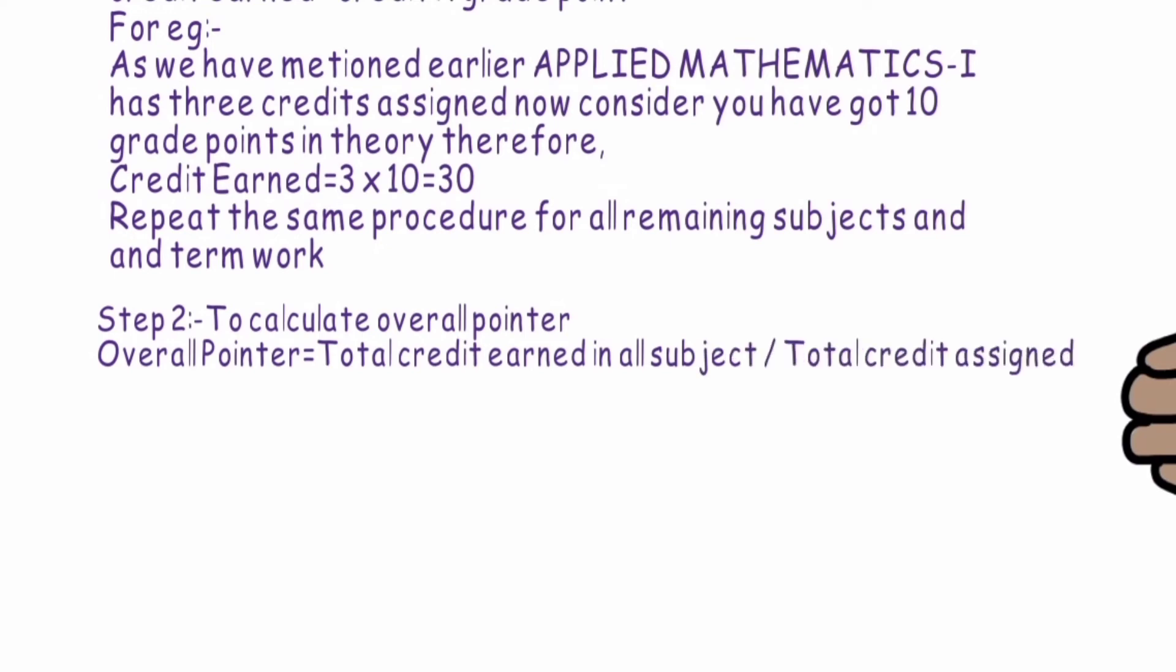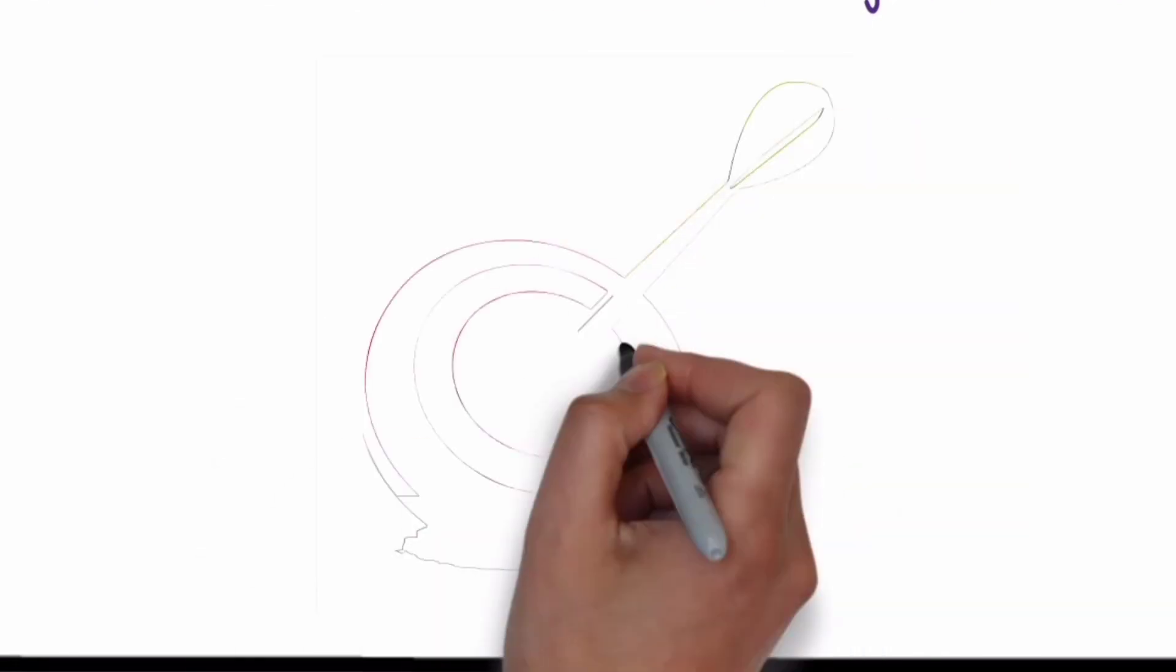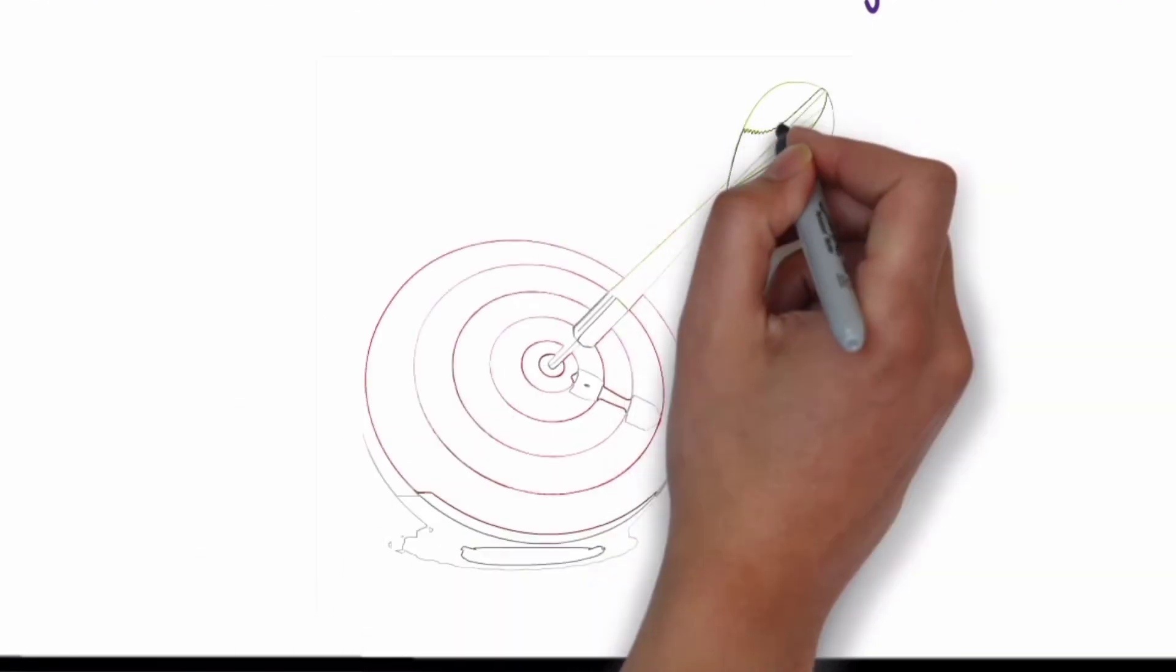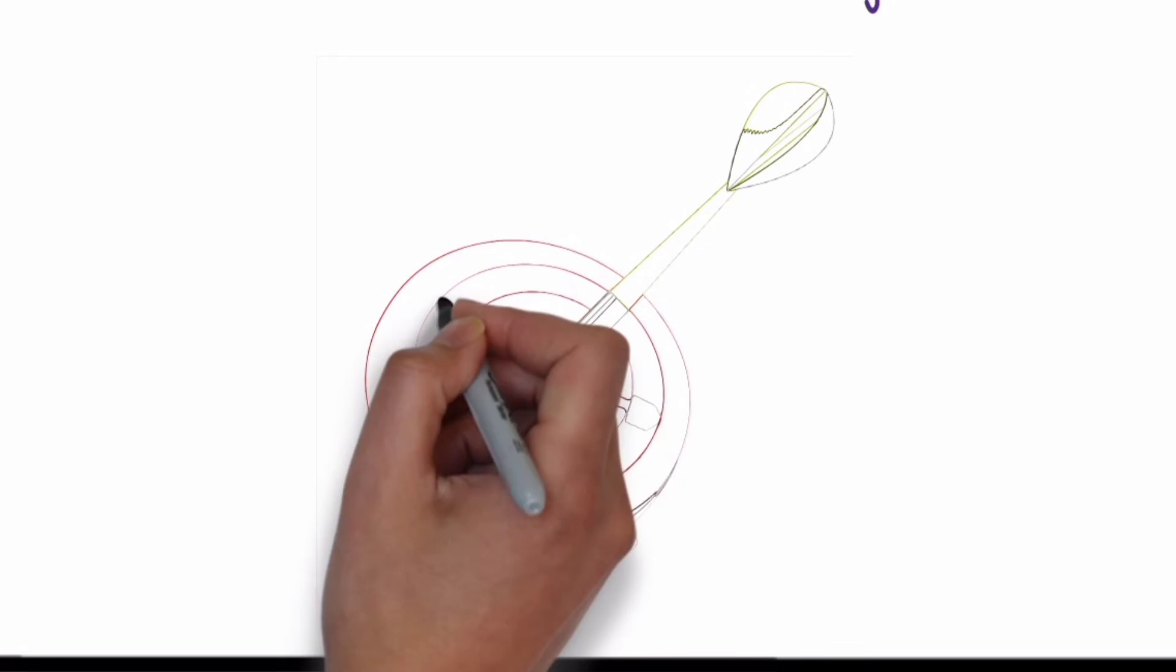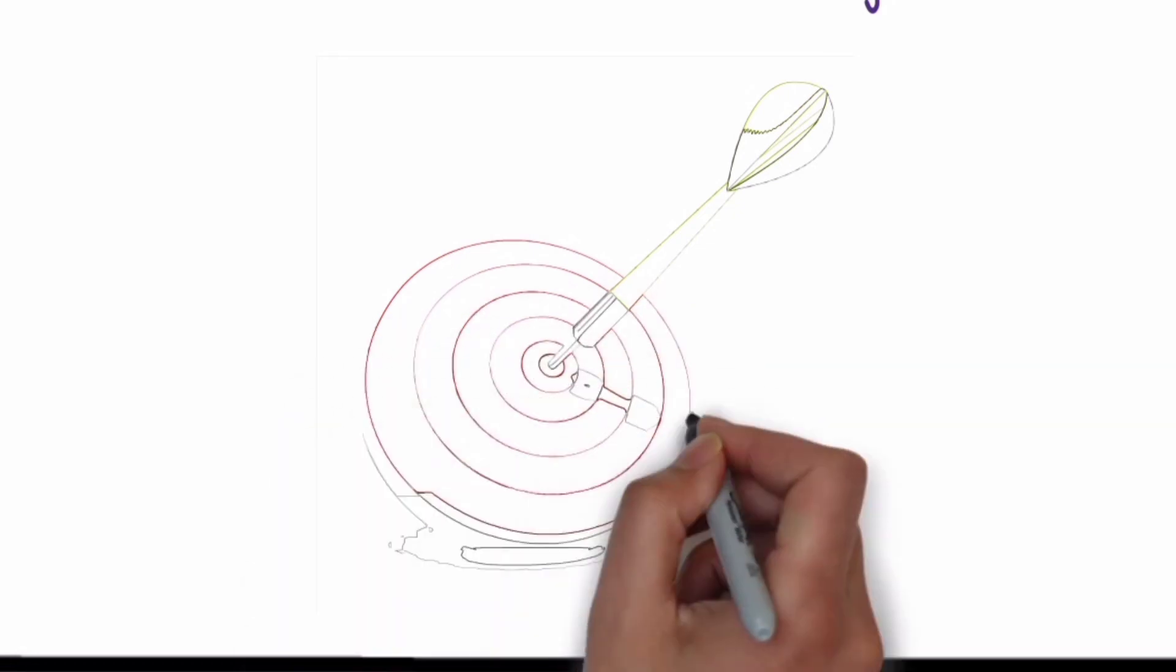you just need to divide the total credits earned in all the subjects by the total credits assigned. This will give you your final pointer for the respective semester, with the help of which you can pre-plan your studies and